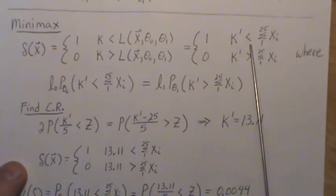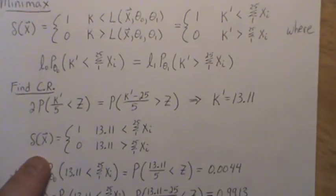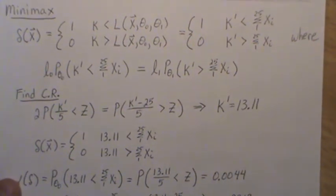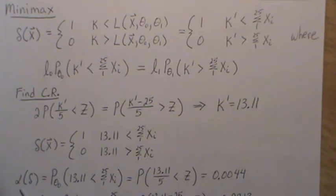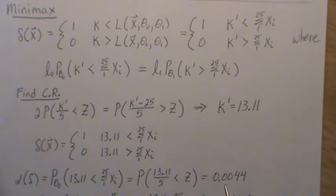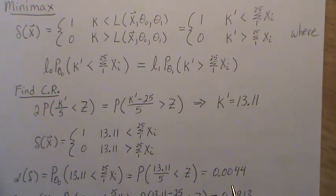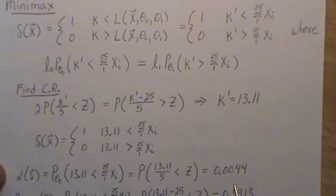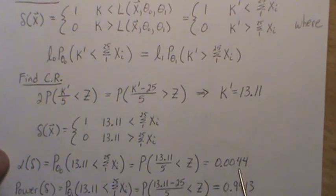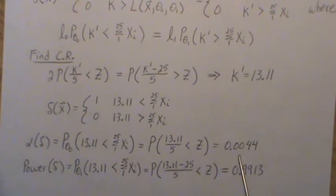So the minimax decision function rejects when the sum of x_i's exceeds 13.11. The alpha — the probability of rejecting when the null is true — after subtracting the mean and dividing by the standard deviation, is 0.0044. This test will also not be more powerful than the most powerful test, since 0.0044 is less than 0.05.